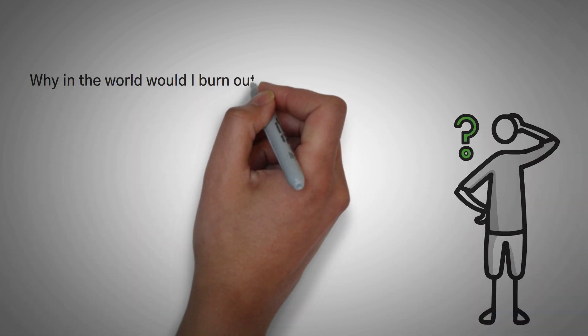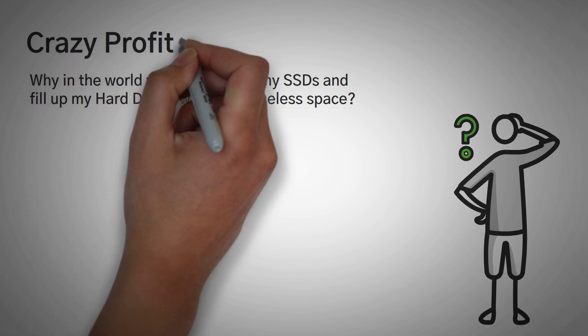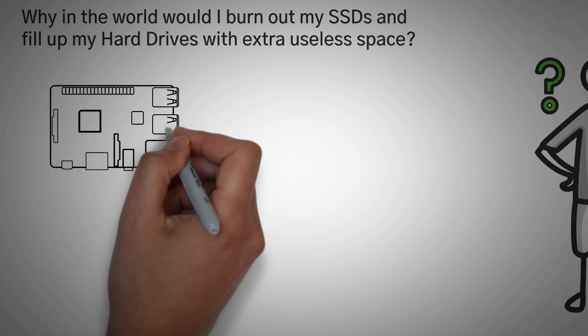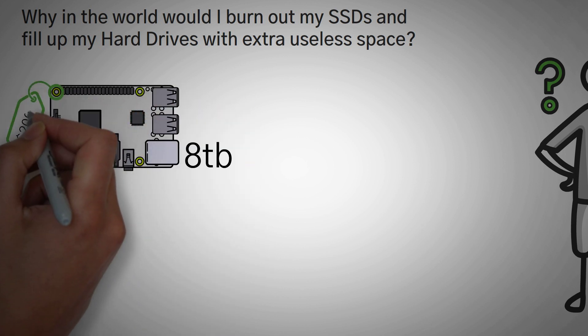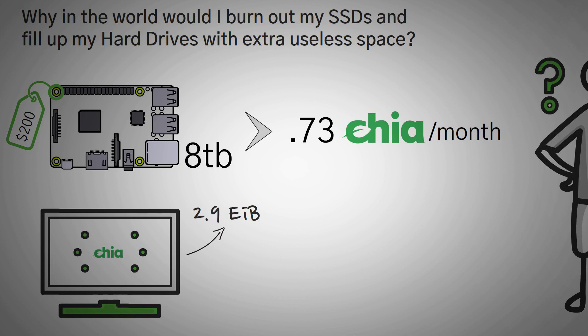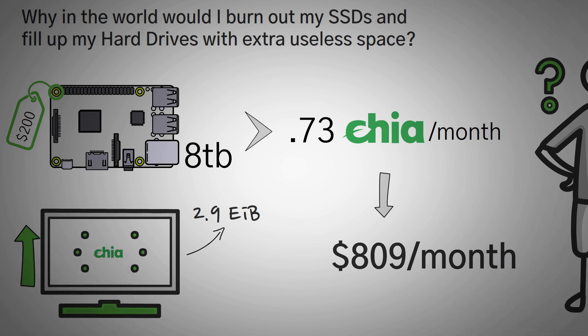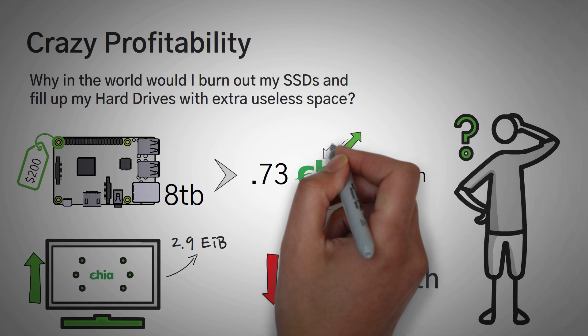You might be wondering why you would burn out your SSDs and fill up your hard drives with extra space. Right now, in early May of 2021, farming Chia is crazy profitable. With current calculations, an 8TB hard drive — which costs roughly around $200 on Amazon — can earn roughly 0.73 Chia a month, with a network size of 2.9 EIB. If you sold that Chia at today's market price, you would earn $809 per month. As the network grows and more people join, this profit rate will go down, and you also have to factor in that the price of Chia may rise or plummet. If you want to farm Chia with your own personal computer — even a laptop — it's very easy to start. All you basically have to do is download the main Chia application, select your plotting location and your farming location, and click Go.